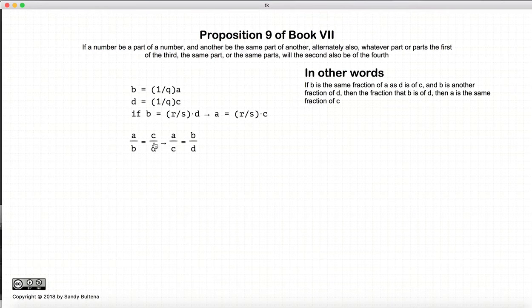Again, we are dealing with fractions. This is a little bit different than the previous propositions on fractions. We're starting with four numbers, where B is a certain part or a single fraction of A, and D is the same fraction of C. And this is where we start to veer a little bit from the previous propositions.